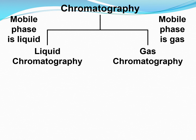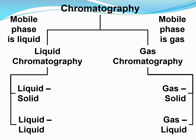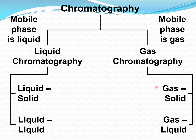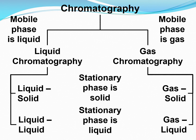Each of these can be further classified based on the stationary phase. Liquid chromatography is classified into liquid-solid and liquid-liquid chromatography. In the naming convention, the first term refers to the mobile phase and the second term refers to the stationary phase. So in liquid-solid and gas-solid chromatography the stationary phase is a solid, whereas in liquid-liquid and gas-liquid chromatography the stationary phase is a liquid.